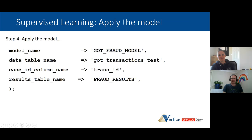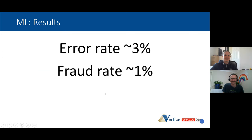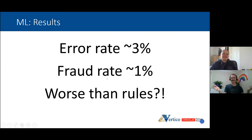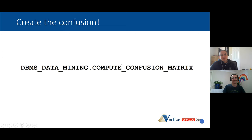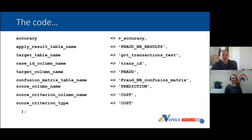We probably need to break this down into a confusion matrix to really compare results. The database has a COMPUTE_CONFUSION_MATRIX function — we pass it the results table, the test table, and tell it the target column is fraud. From that we fill in our answers. The machine learning found 832 of the transactions that are actually fraud — about 10 times more than the SQL rules. But you're still twice as likely to get away with it as be caught, and the false positive number is high — the Baratheons will be even more annoyed.